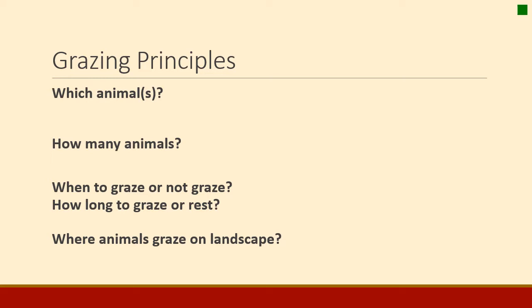The first thing one decides when they go to the range is what kind of animal to graze — livestock species, type, and age of animal. Is it a cow-calf operation? A yearling-ewe operation? What is it that you're trying to manage for on the range? We could talk about wildlife too, but it's much more difficult to select a species or type of wildlife and manage them, so in grazing management we're usually talking about livestock principles.